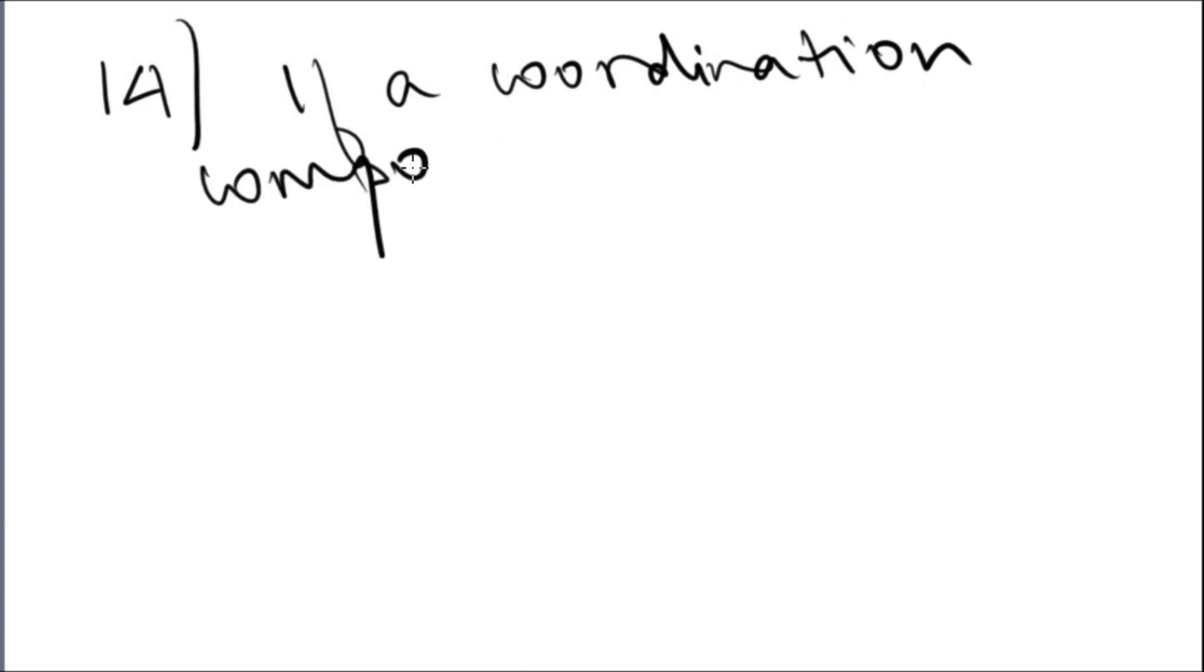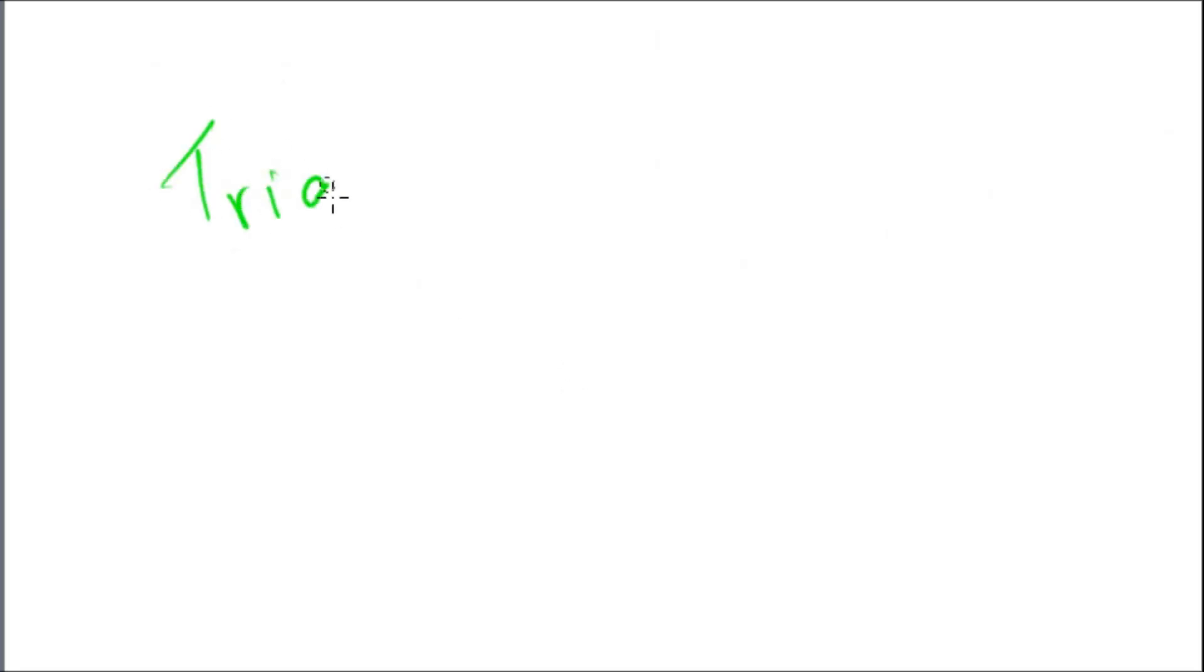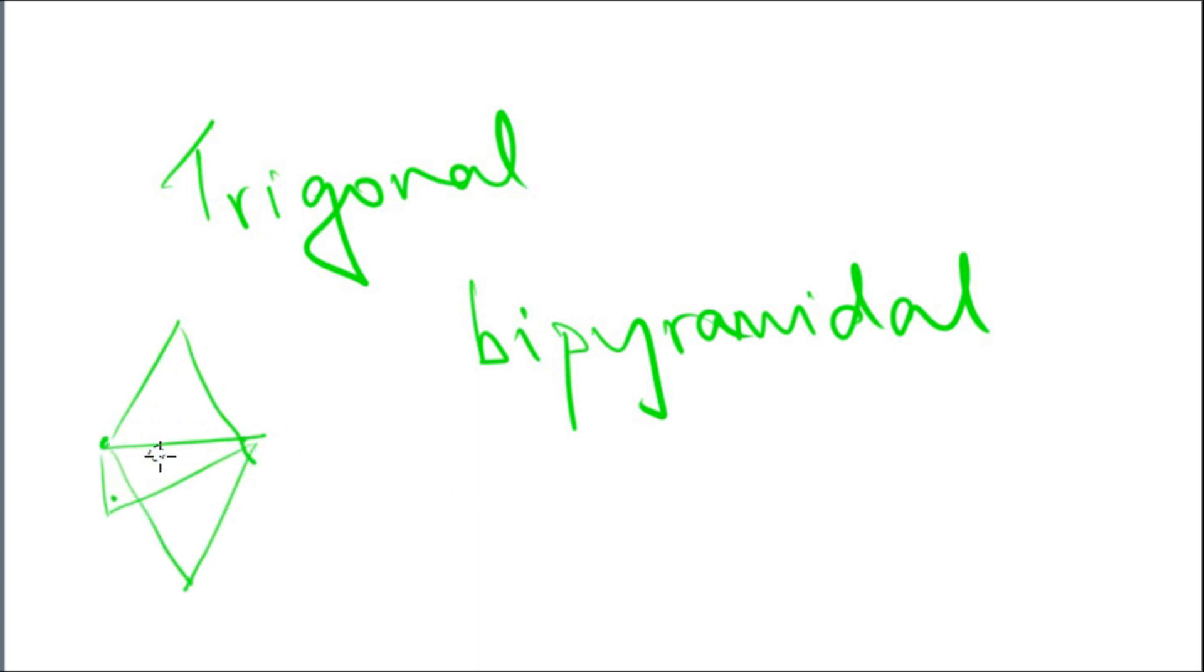Question number 14: if a coordination compound had or has five ligands, what geometrical shape will it acquire? The answer is trigonal bipyramidal, and this is how you draw it. First you draw a triangle, then you join it from the top and the bottom to make it bipyramidal, and then you can count you have five points for attachment of the ligands.